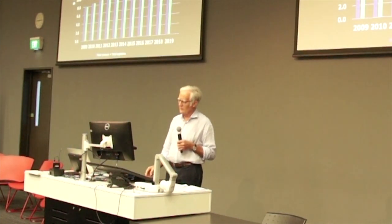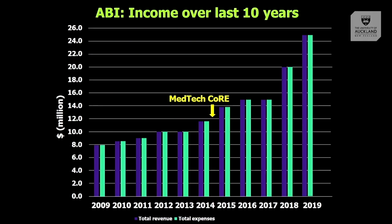Our income over the last 10 years has tripled from 2009 to 2019, with no sign of slowing down. We never deliberately try to grow, but we somehow just keep on growing and keep on worrying about space.